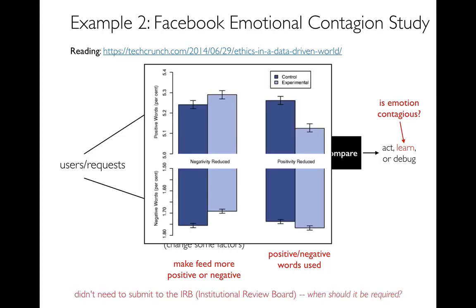This raised quite a controversy. We have two experiments: on the left they were reducing negativity, and on the right they were reducing positivity. You can immediately see that when you see fewer positive things on Facebook, you're less positive yourself. That's concerning because maybe they're running this experiment on people who are depressed or dealing with other issues — and maybe this is not an appropriate experiment. If a university were running this, they'd have to submit it to the IRB, the Institutional Review Board. As a company, they only had to get it approved by Facebook's internal ethics board.